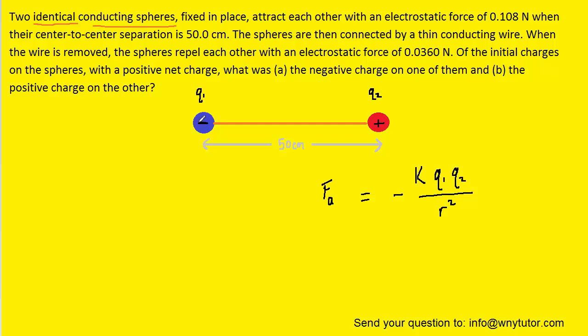Now what will that charge be in symbolic form? Well, it's simply going to be the charge on sphere 1 plus the charge on sphere 2 divided by 2. In other words, it's just the average of the charges.